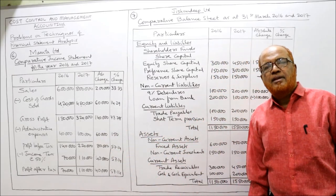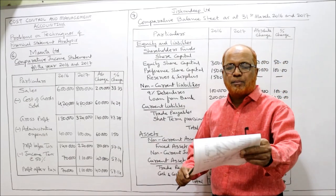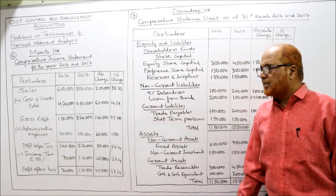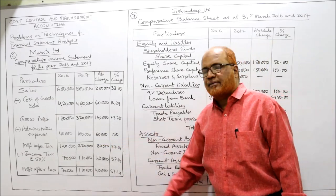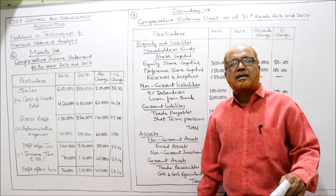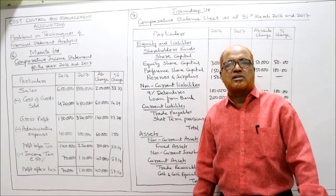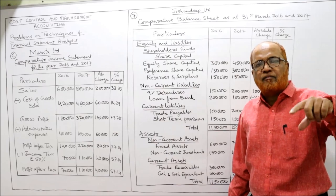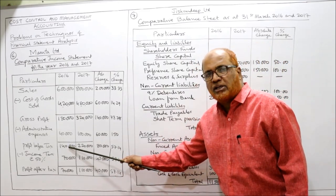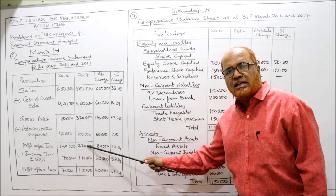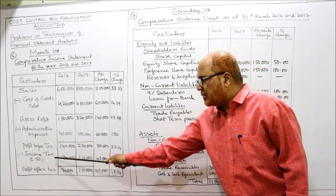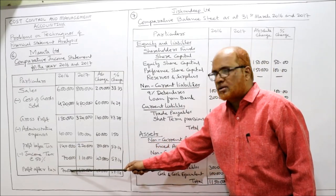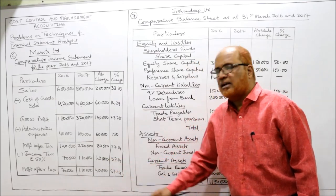After getting gross profit, deduct administrative expenses — given in the problem as 40,000 and 1 lakh. So 180,000 minus 40,000 gives 1,40,000 as profit before tax. Similarly, 3,20,000 minus 1,00,000 gives 2,20,000 as profit before tax. From profit before tax, subtract income tax. Here income tax percentage is 50% for both years, so 50% on profit before tax. 50% of 1,40,000 gives 70,000. 50% of 2,20,000 gives 1,10,000. Subtracting income tax gives profit after tax: 1,40,000 minus 70,000 and 2,20,000 minus 1,10,000 gives 1,10,000. This is the profit after tax.